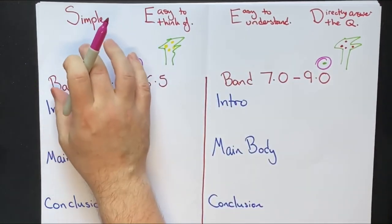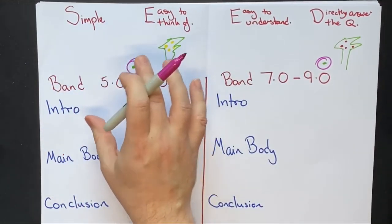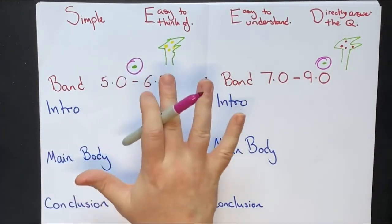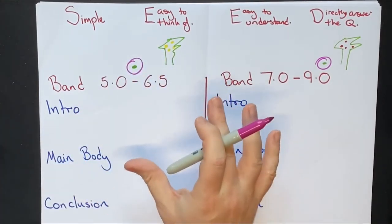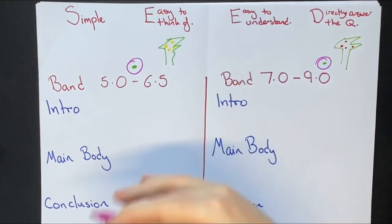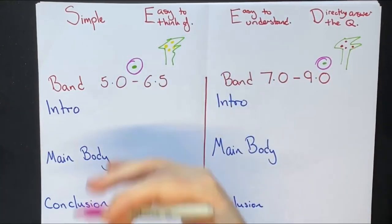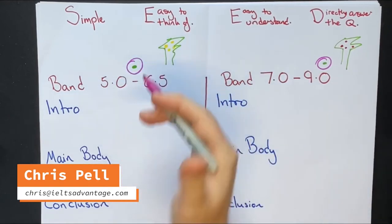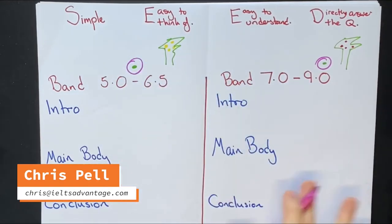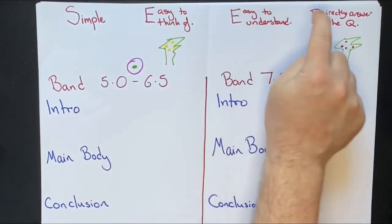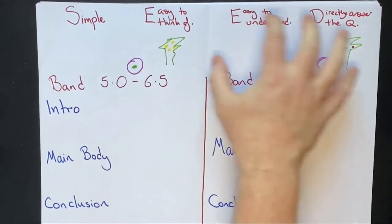Don't listen to people who tell you the examiners are looking for complex ideas. There's nothing in the marking criteria which talks about giving students more marks for high-level, fancy, complex, difficult-to-understand ideas — that is not the case at all. So next time you're doing task 2, remember: S-E-E-D, seed.